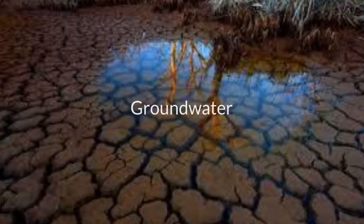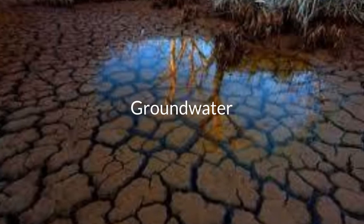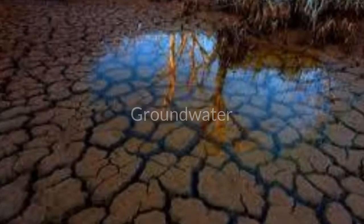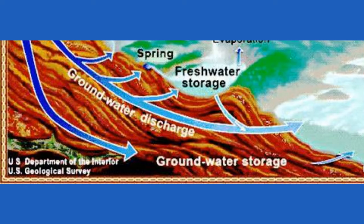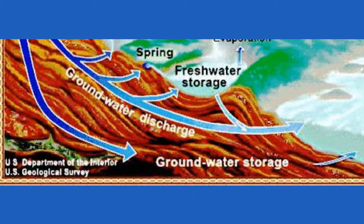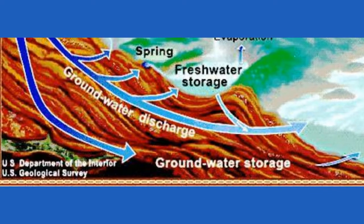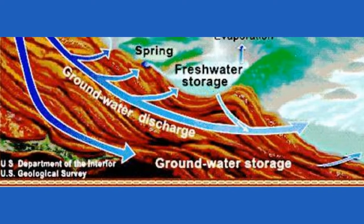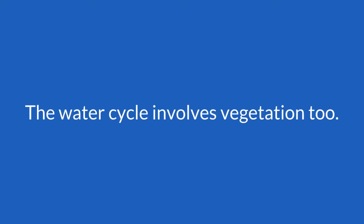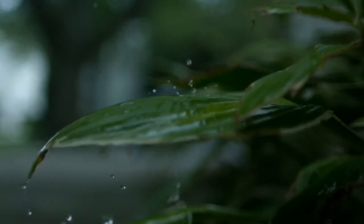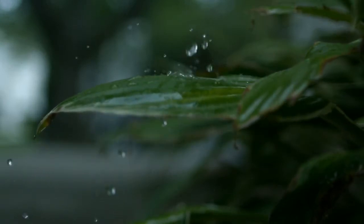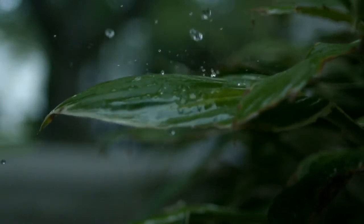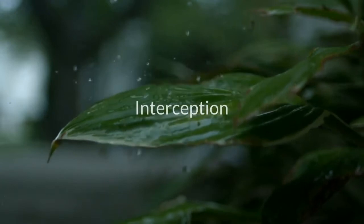Most groundwater — water below the surface — comes from precipitation, and groundwater discharge is the movement of groundwater from the subsurface to the surface. The water cycle involves vegetation too. Precipitation that does not reach the soil, but is instead intercepted by plant leaves, branches of plants, and the forest floor, is called interception.